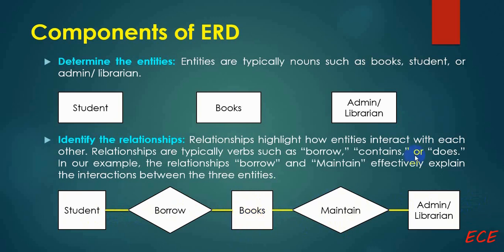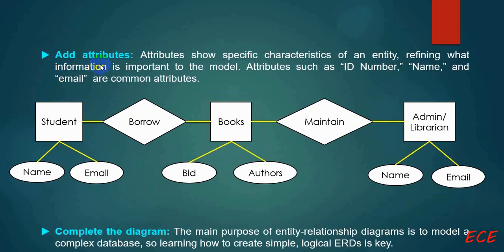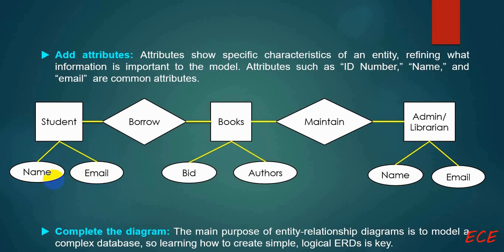After identifying relationships, we can add attributes. Attributes show the specific characteristics of an entity, refining what information is important to the model. Attributes such as ID number, name, and email are common examples. Students have attributes like name, username, password, email, etc. These are shown inside our database table — from the student table columns, we pick the most important attributes for this entity.